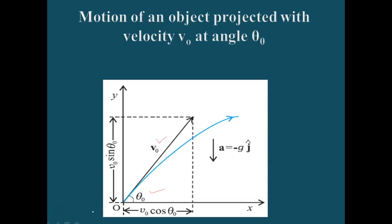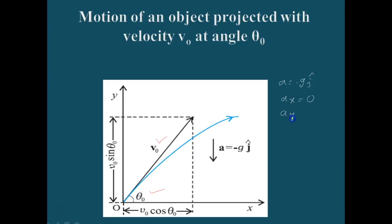After the object has been projected, the acceleration acting on it is due to gravity directed vertically downwards. We can represent that acceleration as minus g j-hat, where the horizontal acceleration ax is 0 and the vertical acceleration is constant, equal to the acceleration due to gravity.